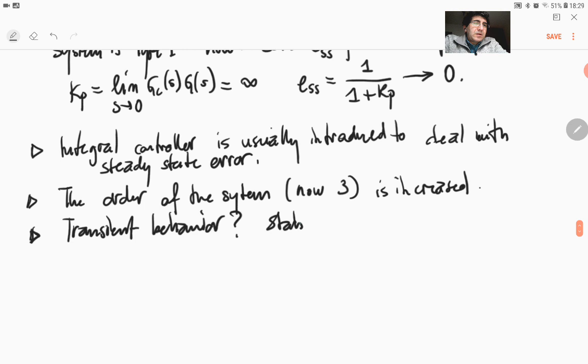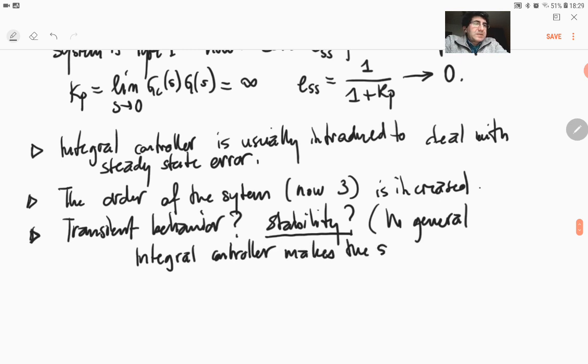In particular, we will talk about in the next lecture a property called stability, and we will see what's the effect of the integral controller on stability. In general, the integral controller makes the system less stable, but we will have to learn about additional tools in order to see how that happens.